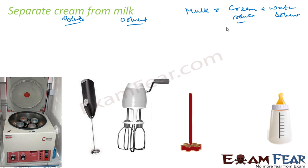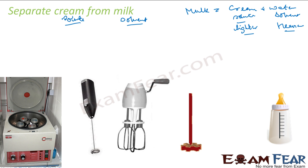Another way: we know that cream is lighter and water is heavier. We can use a centrifuging machine — put the milk in a test tube, and the machine rotates at very high speed. This forces all lighter particles to come up and heavier particles to go down. The lighter particle is cream, so cream will come up and you will see a layer of cream on top.